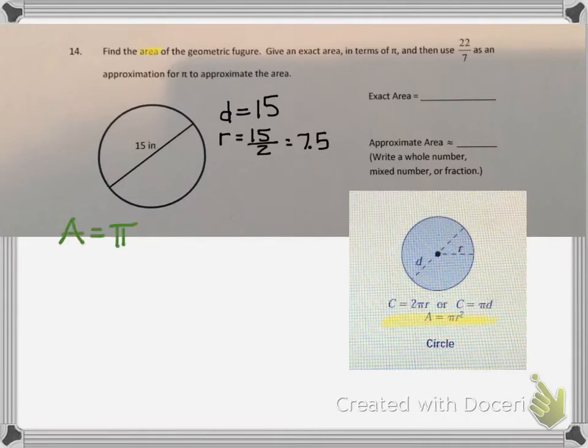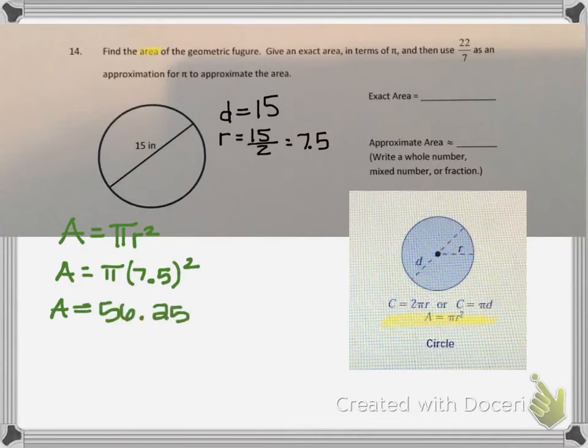I'm going to use my formula A equals pi r squared, and I'm going to replace r with 7.5. 7.5 squared is 56.25. So my exact area in terms of pi is 56.25 pi inches squared.